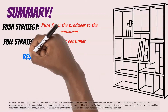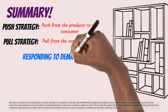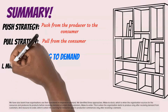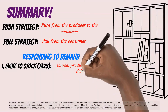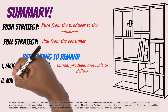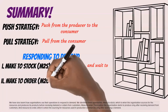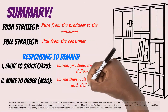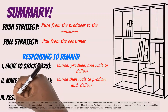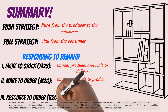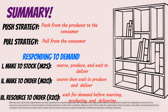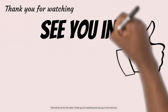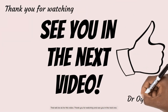We have also learned how organizations use their operations to respond to demand. We identified three approaches: make to stock, which is when the organization sources resources and produces its products before receiving demand; make to order, which is when the organization starts to produce only after receiving demand from customers; and resource to order, which is when the sourcing for resources commences only after receiving a demand. That will be all for this video. Thank you for watching and see you in the next one.